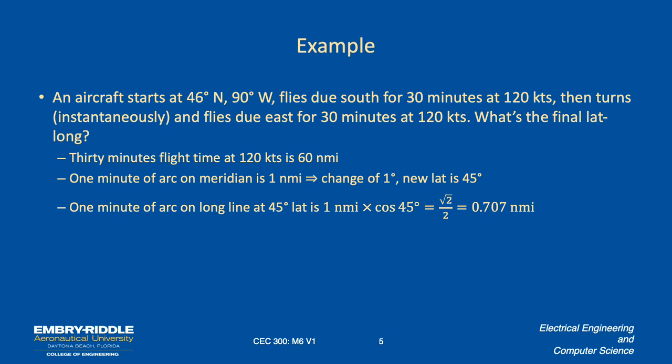So at 45 degrees, one minute of arc ought to be 1 over root 2, or 0.707 nautical miles. So we can take our 60 nautical miles and divide it by 0.707 nautical miles, then multiply that by what would have been one minute of arc. So we've gone through 84.85 minutes of arc actually, which is one degree and 24.85 minutes. The new position is 45° N, 87° 35.15' W.